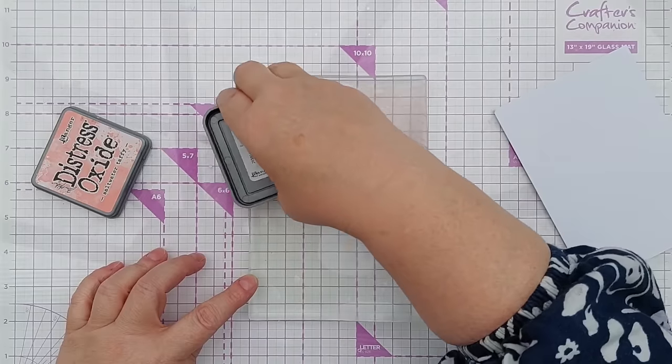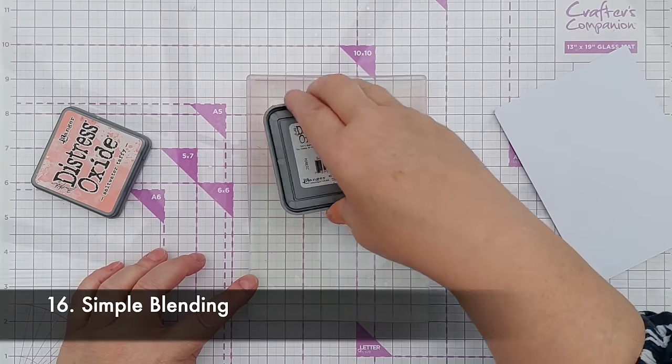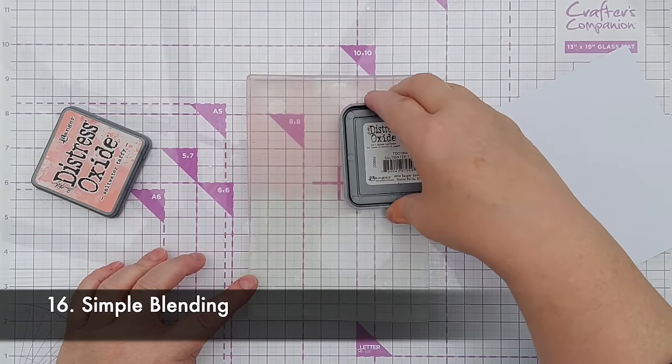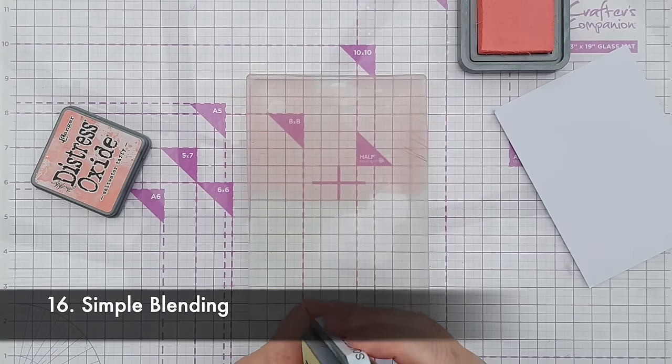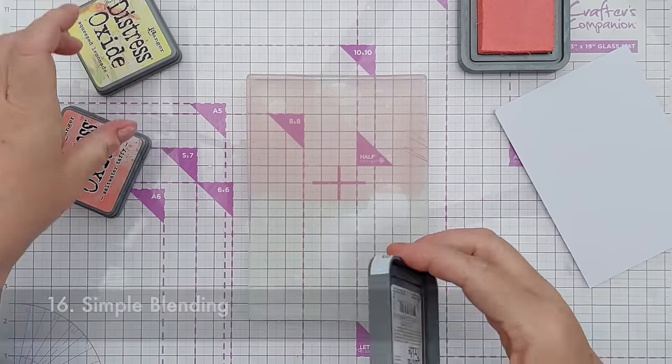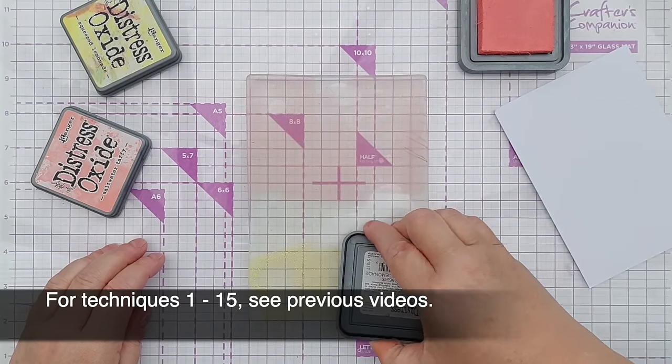The first thing we're going to look at is simple straightforward blending of colors on a gel plate. So I've got saltwater taffy distress oxide there and squeeze lemonade.